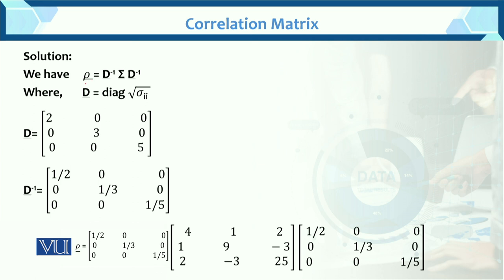We have the correlation matrix formula D inverse sigma D inverse, where D is equal to diagonal of sigma. Now you have diagonal sigma 1,1, sigma 2,2, 3 by 3, sigma 3,3.